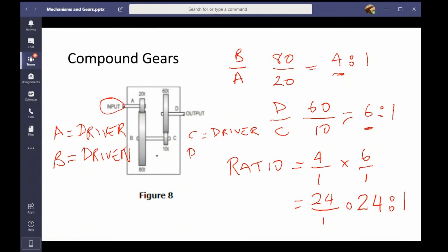So the output speed, since it's stacked up now, is 24 times slower than the input speed. Okay, so you can actually work that out now.